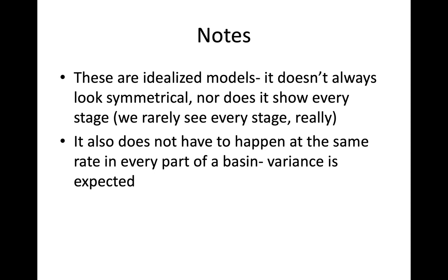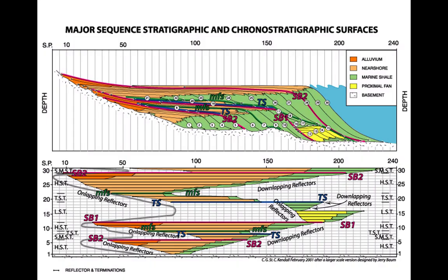This does not have to happen at the same rate in every part of a basin — it's not happening all over the world at the exact same time. Variance is expected. These sequence boundaries show us the boundaries between sequences where we see sea level rise and sea level fall.